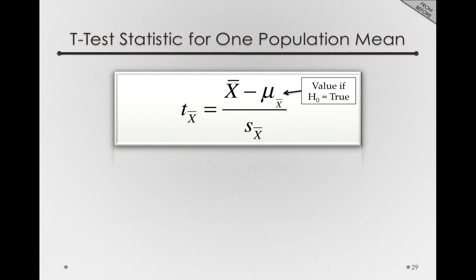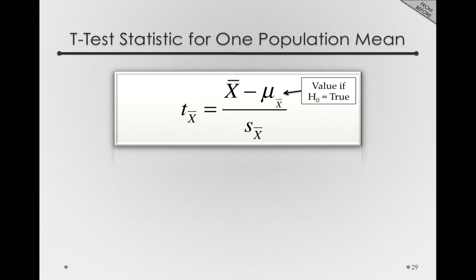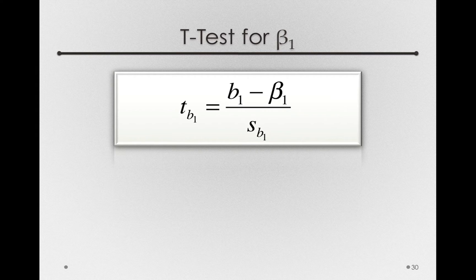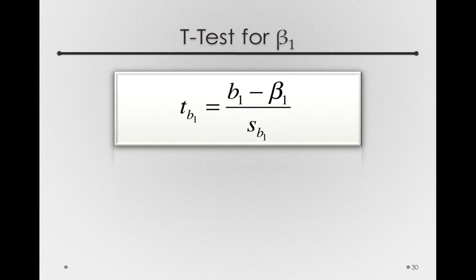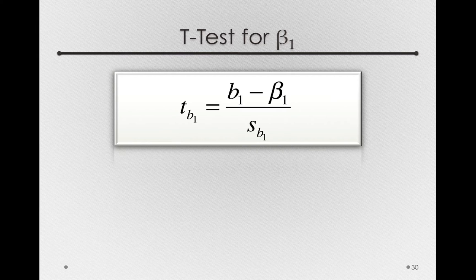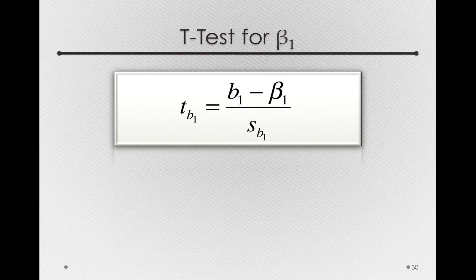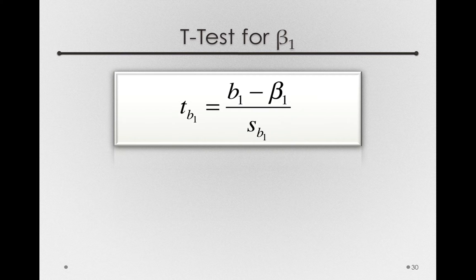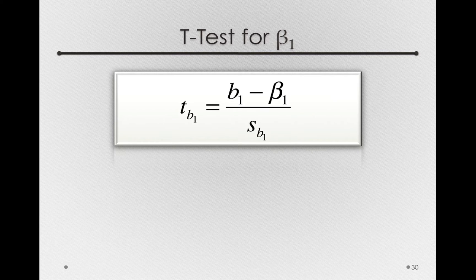Let's start with the t-test for beta1, that is, for the slope in the population. The t-statistic for b1 is simply the observed value of b1, the slope observed in our sample, minus the population value of beta1 if the null hypothesis is true, divided by the estimated standard error of b1.